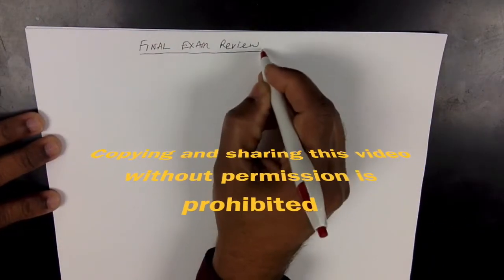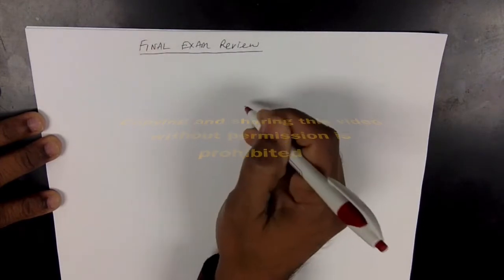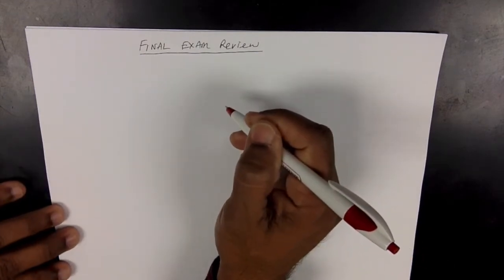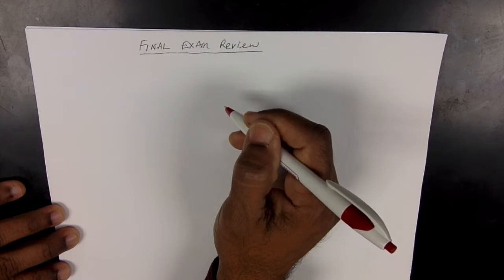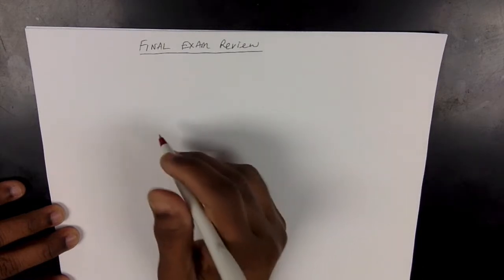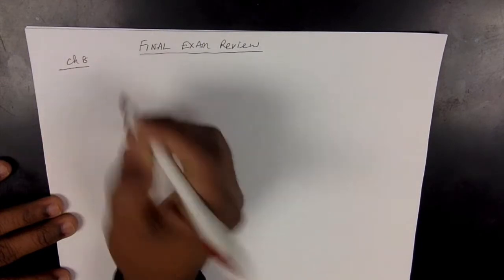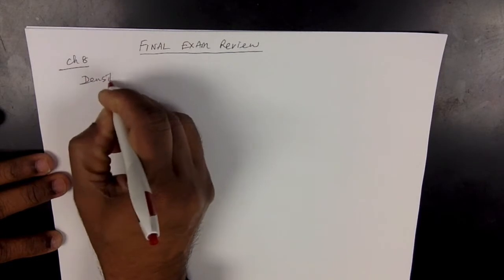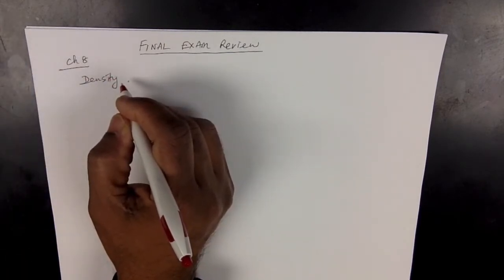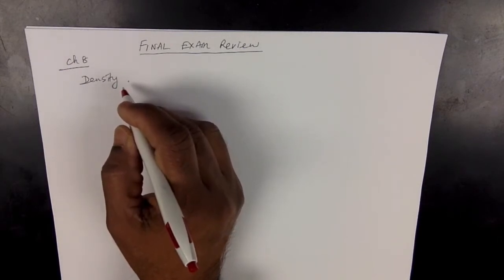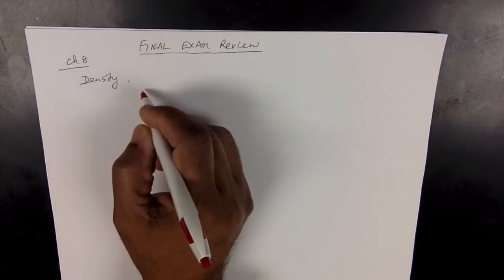For the final exam, you need to go over some of these points that I'm going to cover in this video. Make a study guide and prepare for the exam, starting with Chapter 8, which is basically about fluids. You should know the basic idea of density — you'll find this on page 271 — and then the other concept you need to know is about buoyancy.